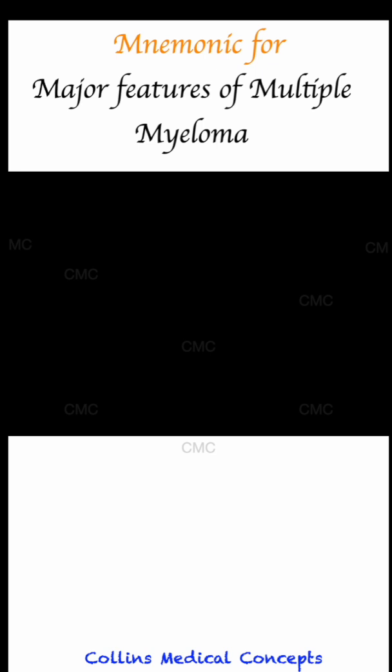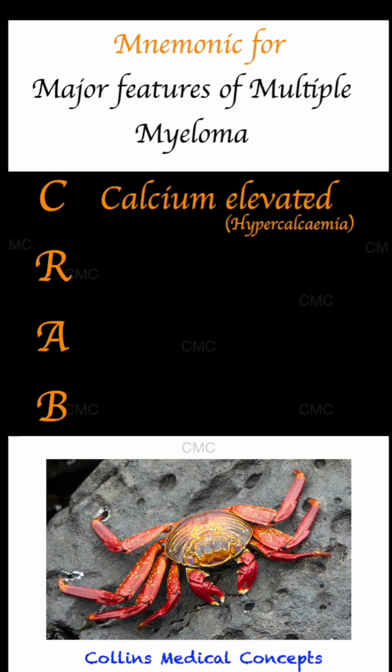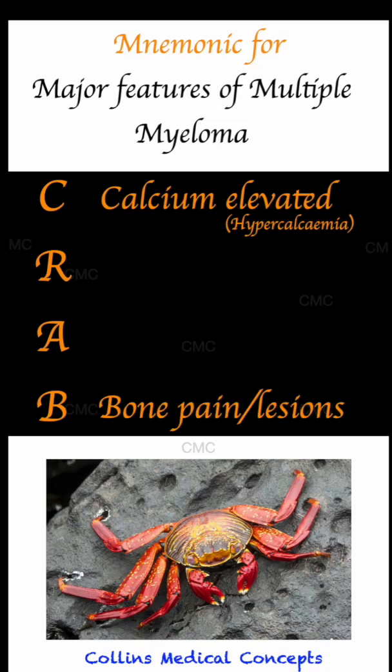Without further ado, here is our mnemonic CRAB. C for raised calcium, in other words hypercalcemia. This happens because of bone destruction caused by the cancer, which releases a lot of calcium into the bloodstream. This also causes bone aches and bone lesions, which is also a very important feature of multiple myeloma, and hence why the last letter B is for bone aches and bone lesions.